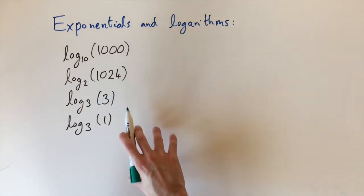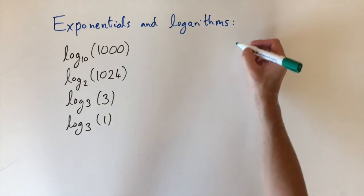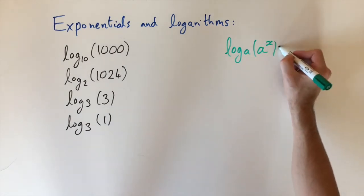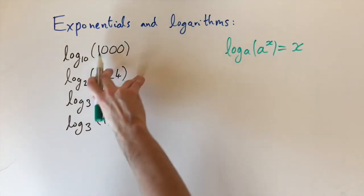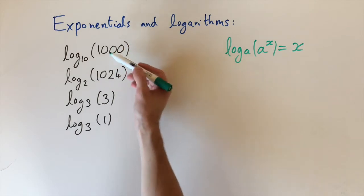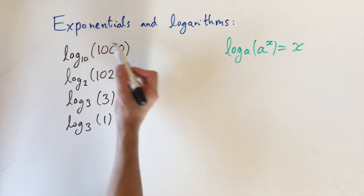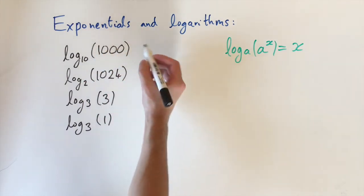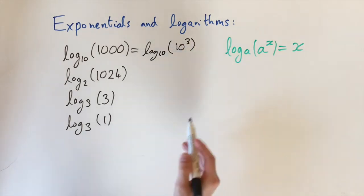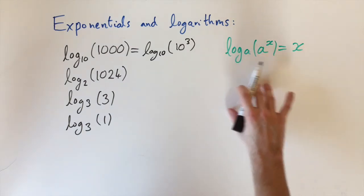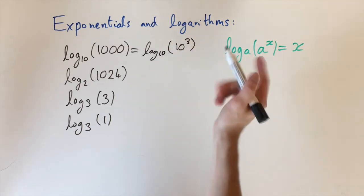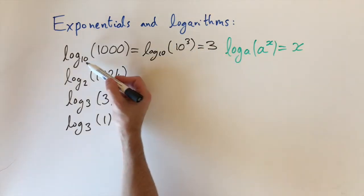Here are four examples of logarithms we want to evaluate exactly. The approach is to use the idea that log base a is the inverse of the exponential, so if we apply it to a to the power of x we get x back. If we can express these numbers as exponentials in the given base, we can read off the answer straight away. For the first one, log base 10 of 1000: we write 1000 as 10 to the power of 3. Using the inverse relationship, log base 10 cancels with the base 10, leaving just the exponent 3. So log base 10 of 1000 equals 3. For the second one, log base 2 of 1024: we express 1024 as 2 to the power of 10. Using the same idea, this equals 10.